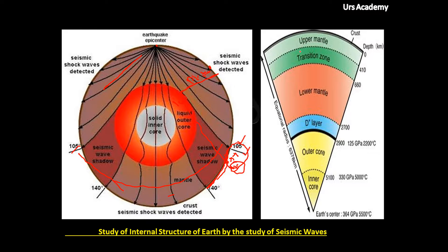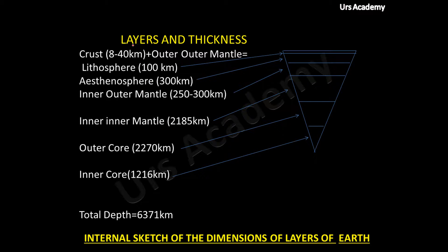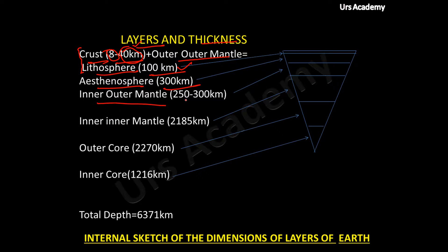From the study of earthquake waves we have found the discontinuities and determined the layers and their thicknesses. The crust is 8 kilometers thick at oceans and up to 40 kilometers at continents. Together, the crust and outer mantle total about 100 kilometers and act as a single unit known as the lithosphere, as both are solid. The asthenosphere is also part of the mantle and is 300 kilometers thick. The inner outer mantle is 250–300 kilometers. The inner mantle is 285 kilometers. The outer core is 2270 kilometers, the inner core is 1216 kilometers, and the total depth is 6371 kilometers.